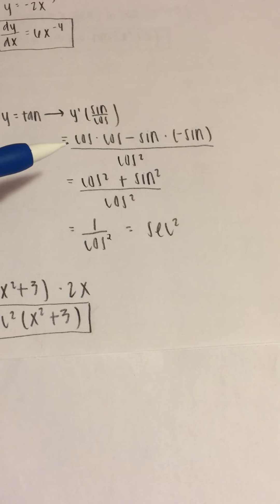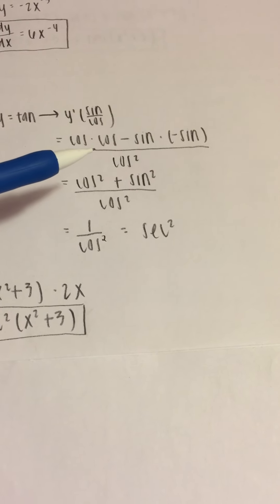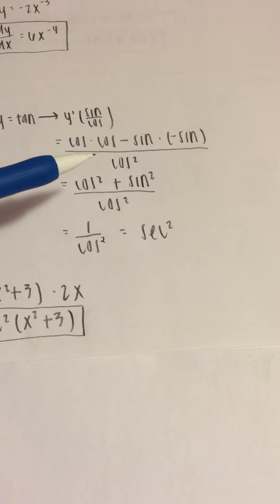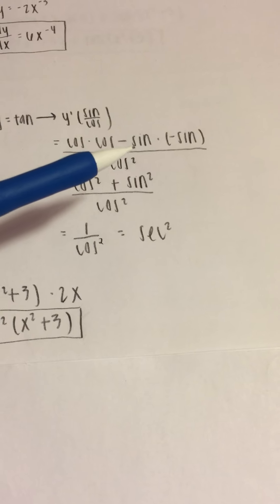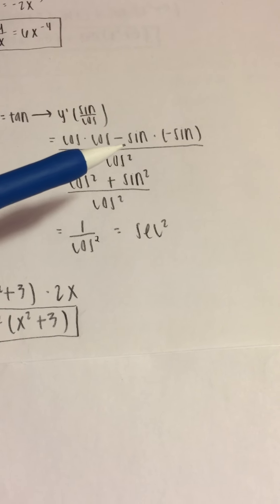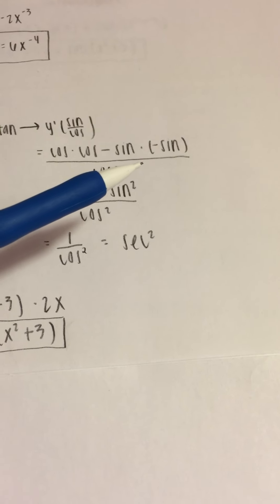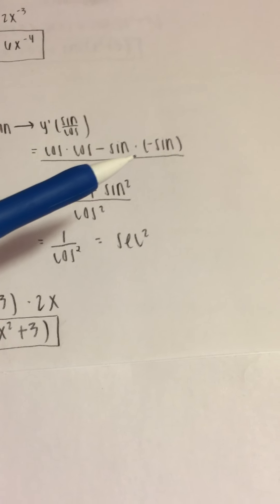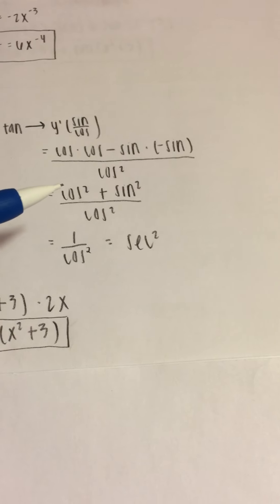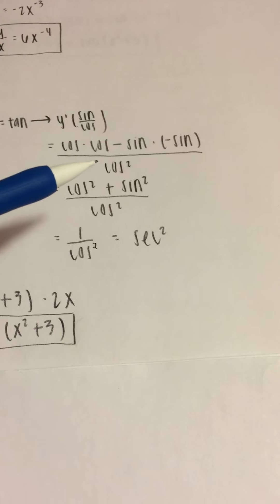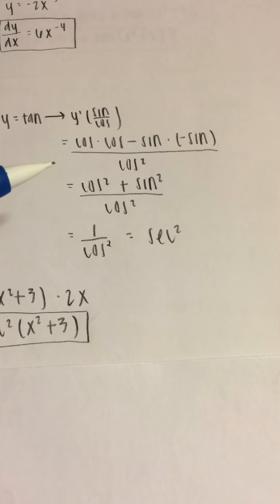We take the bottom function, cosine, and multiply it by the derivative of the top function — the derivative of sine is cosine — then minus the top function, sine, multiplied by the derivative of the bottom function. The derivative of cosine is negative sine. All of this is over the bottom function squared, giving cosine squared.